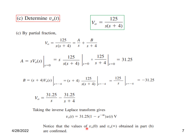Note that the values from part b are confirmed: setting t equals 0 gives e^0 equals 1, so 1 minus 1 equals 0, confirming v0(0) equals 0. Setting t equals infinity gives e^{-∞} equals 0, so the answer is 31.25, confirming v0(∞) equals 31.25 as found previously.